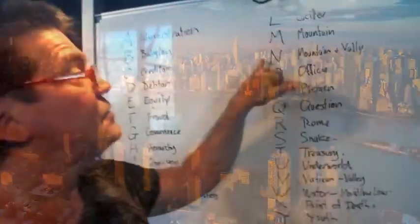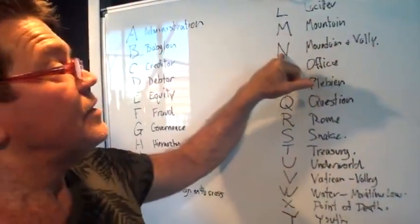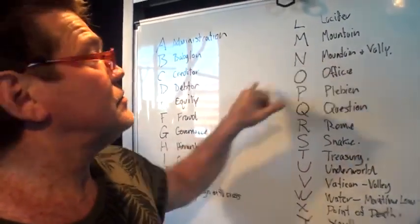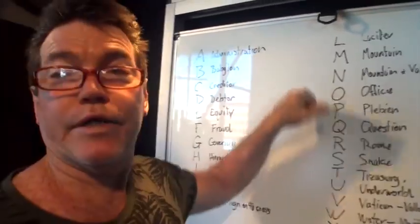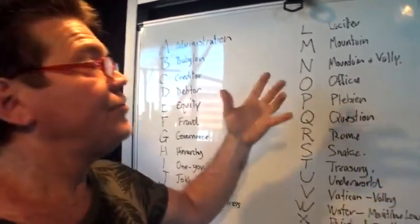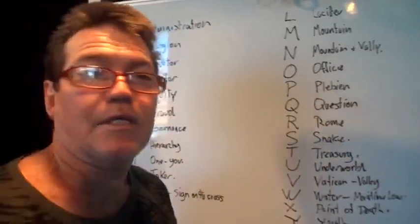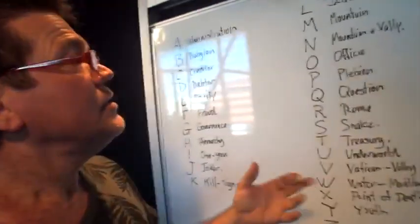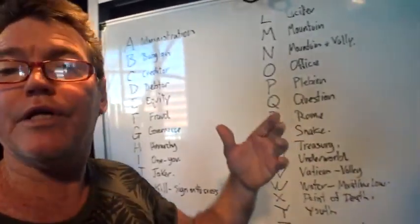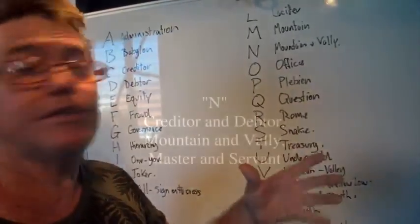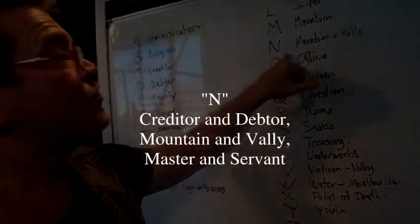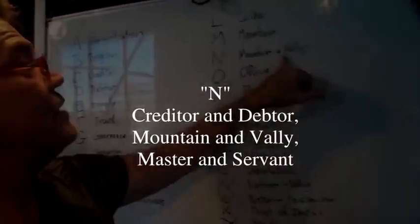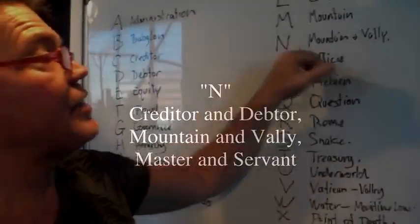N — neutral. Which is mountain and valley joined together — neutral, nothing. All the N words have to do with mountain and valley.